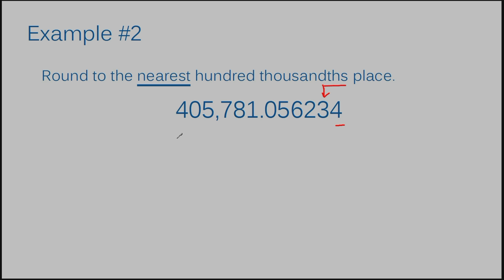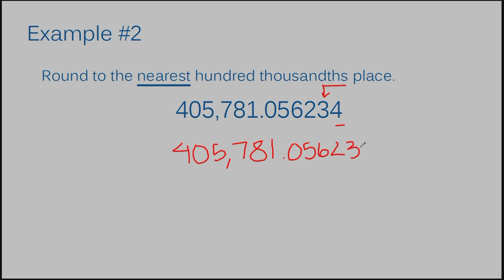All I need to do to write this answer is rewrite this entire number, leaving the four off — it would become a zero. Since it is the very last number in my overall number, I can just drop that. So we will end with the answer of four hundred five thousand seven hundred eighty-one and five thousand six hundred twenty-three hundred thousandths. That was a mouthful. This number may seem very long, but even if you are not the best at saying your numbers just yet, that's okay. When we are rounding, really all you need to be able to do is rewrite the number and know how the number should end.